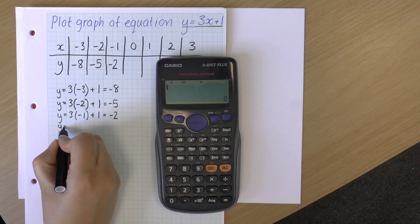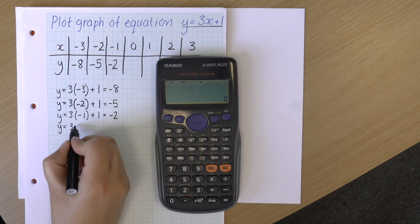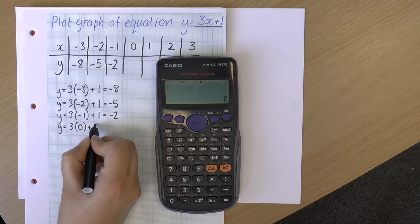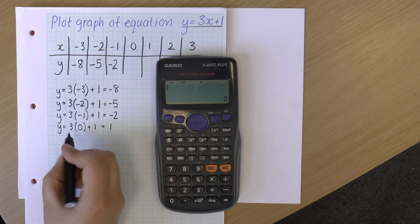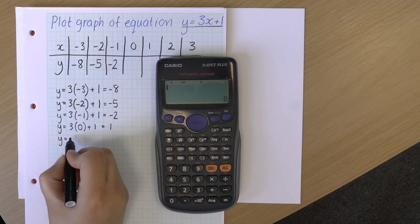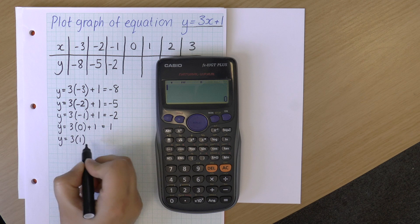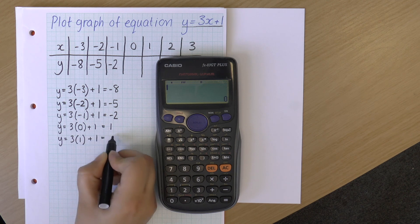Carrying on. y equals 3 times 0 plus 1. 3 times 0 is 0, plus 1 is 1. y equals 3 times 1, which is 3, plus 1 is 4.